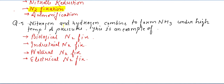Next question: nitrogen and hydrogen combine to form NH3 (ammonia) under high temperature and pressure — this is an example of what? Options: biological nitrogen fixation, industrial nitrogen fixation, natural nitrogen fixation, or electrical nitrogen fixation. The answer is industrial nitrogen fixation. Biological nitrogen fixation is carried out through prokaryotes — various types of bacteria, either free-living or symbiotic.